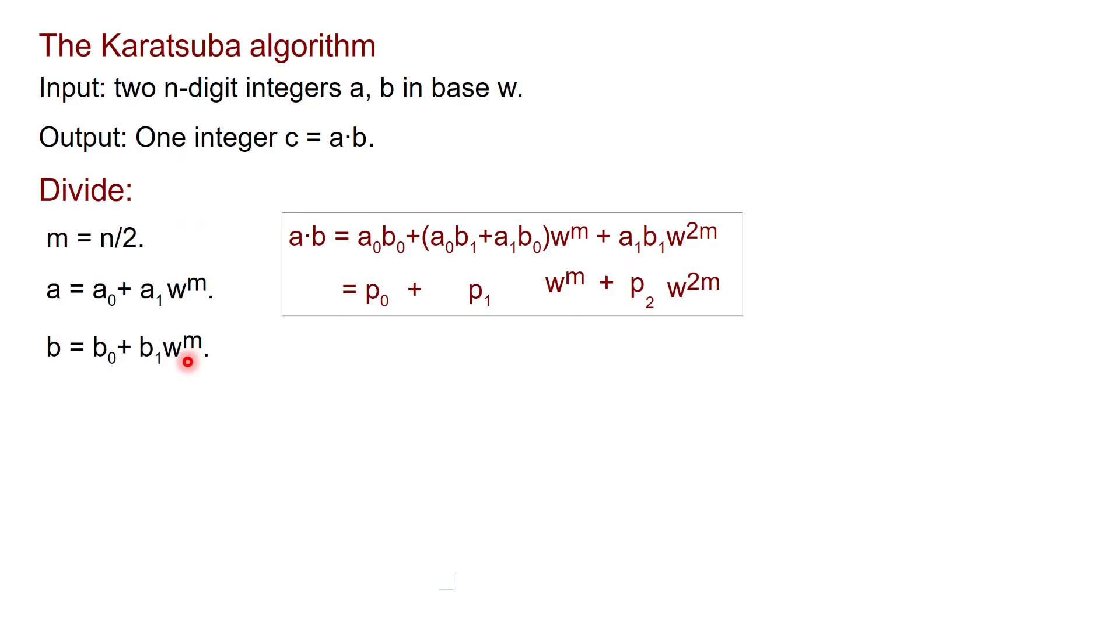And now this looks very familiar to what we were doing before. Our goal is to compute A times B, which now corresponds to P0 plus P1 W to the n over 2 plus P2 W to the n over 2 squared, just like before. So we will do the same trick.